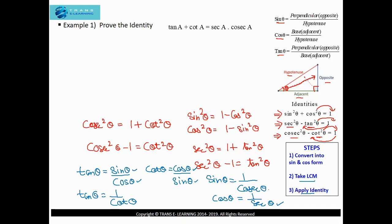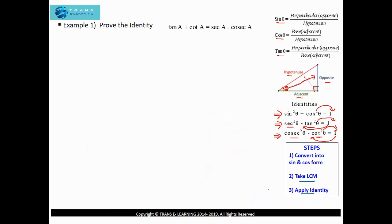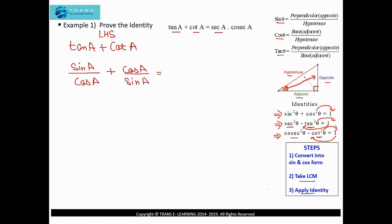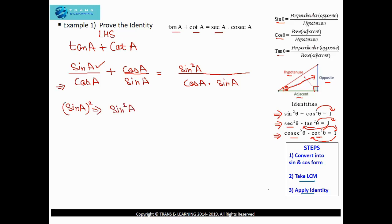Now here you can see the first question. We have to prove the identity: tan a + cot a = sec a × cosec a. I will be solving the left-hand side. The first step is to convert into sine and cosine form: tan a = sin a / cos a, and cot a = cos a / sin a. The second step is to take the LCM, which in this case is cos a × sin a. Comparing the denominator of the first term with the LCM, we are left with sin a, which multiplied by sin a gives sin²a.